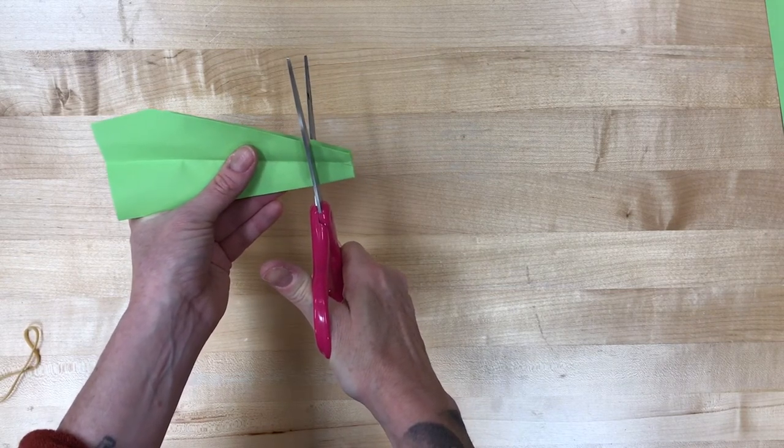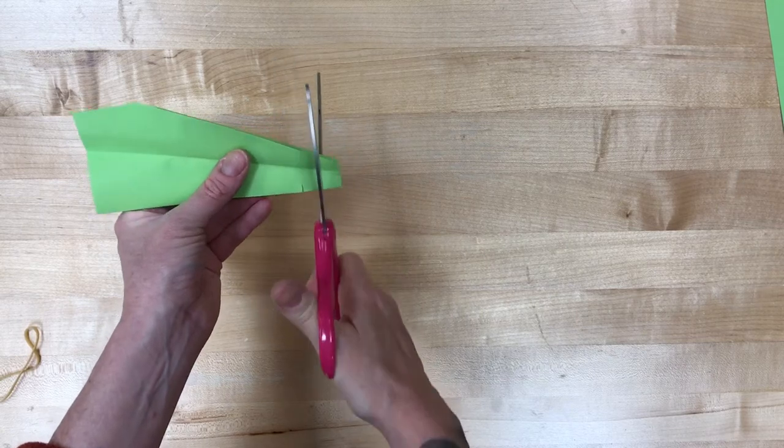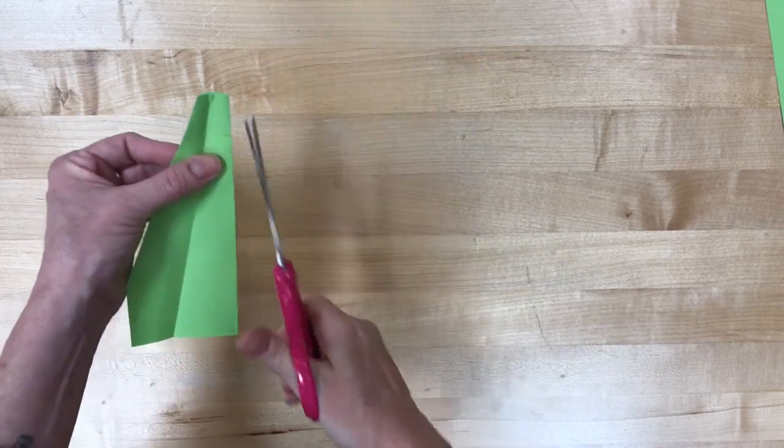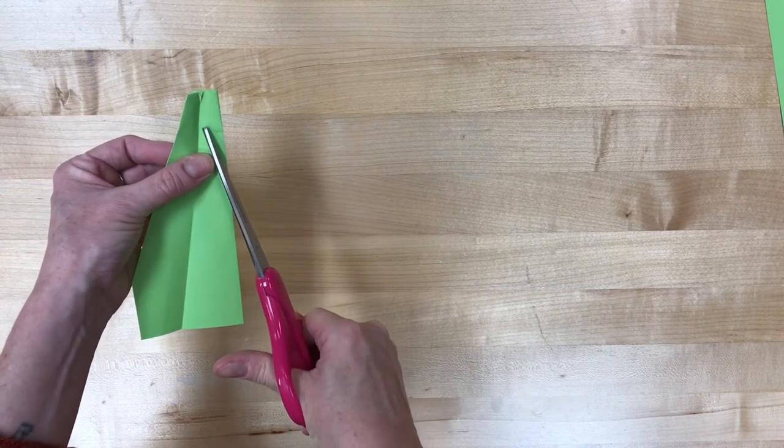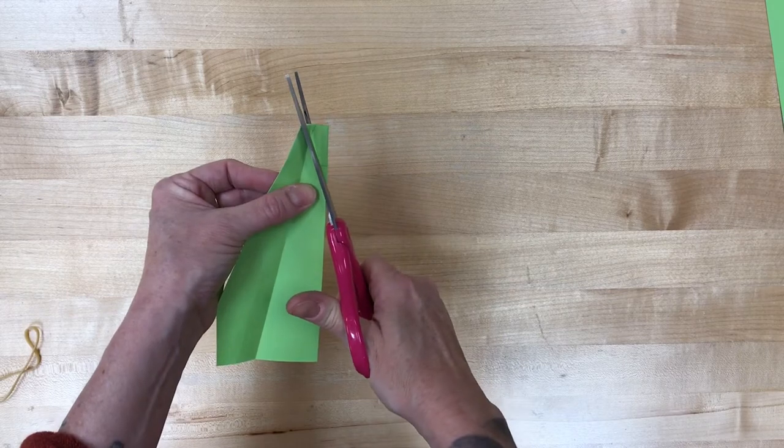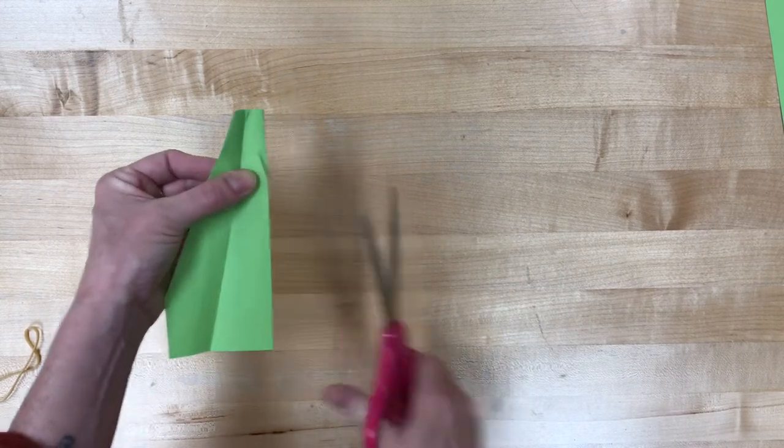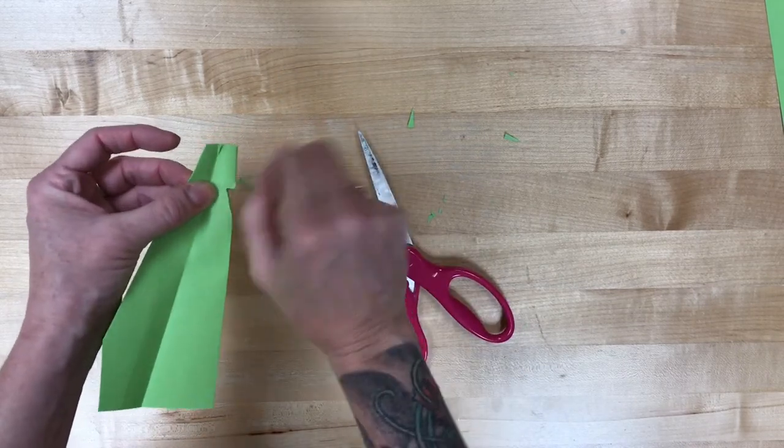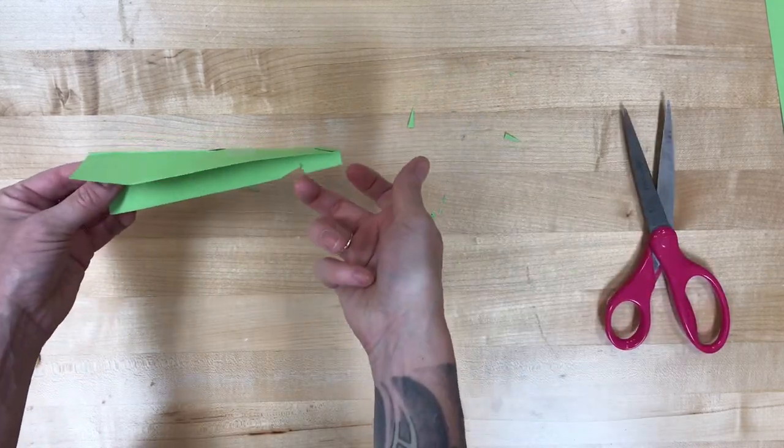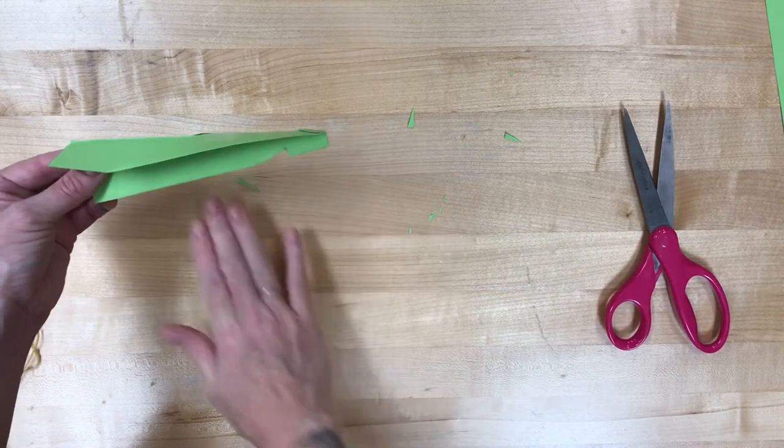Start small, because you can always cut bigger, but you can't take it back once you've cut. Then I'm going to make a diagonal cut that goes right up to it. So we're cutting a triangle shape. That is going to be where our rubber band is going to hook on to help us launch this.